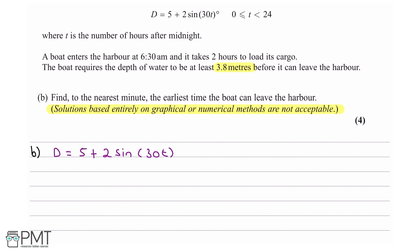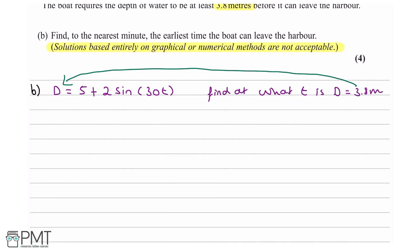So what we need to do is we need to find at what t is d equal to 3.8 metres. So we need to plug in our value of 3.8 into our expression for d and use that to solve for t. We're going to say 3.8 equals 5 plus 2 sine 30t. I'm going to bring the 5 to the other side. So we're going to have 3.8 minus 5 is minus 1.2 equals 2 sine 30t. I'm going to divide both sides by 2. So we have minus 0.6 equals sine 30t.